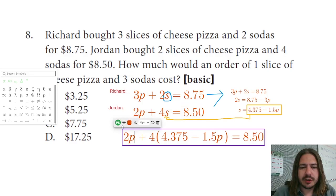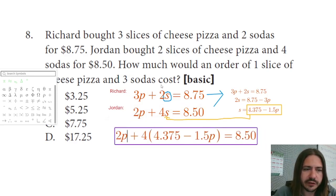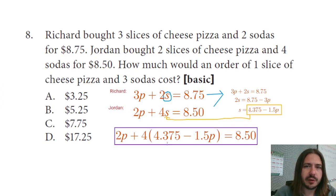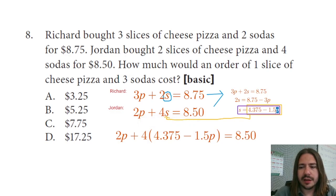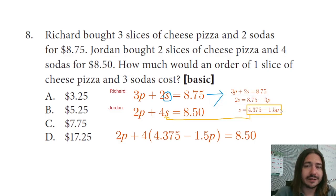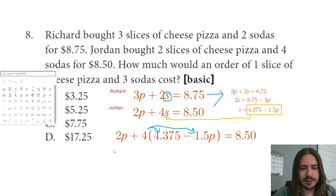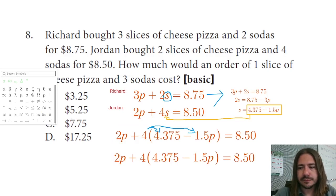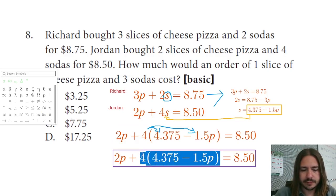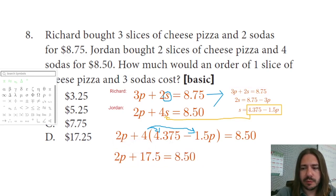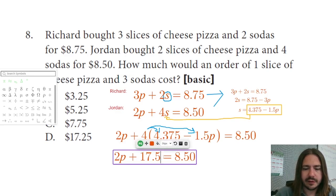I'm going to solve this equation for P, going through my normal solving steps. First, I'll distribute the 4: 4 times 4.375 is 17.5, and 4 times 1.5 is 6, so that gives me 2P + 17.5 − 6P = 8.50.